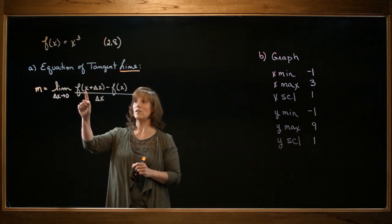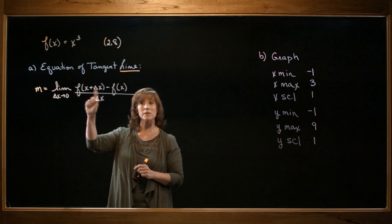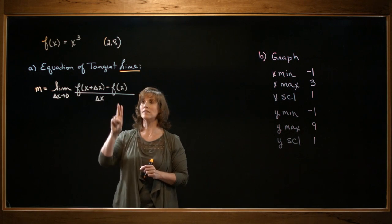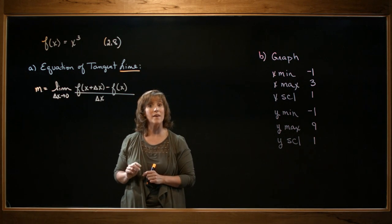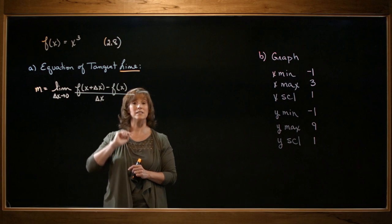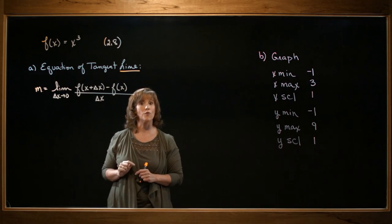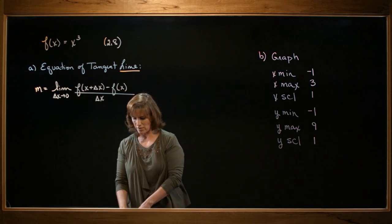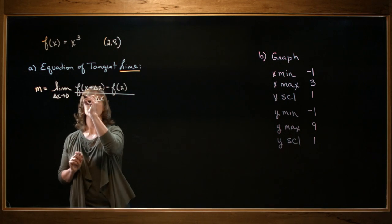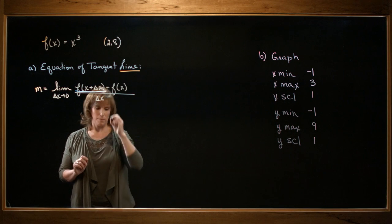We'll be looking at the function value when the input is x plus delta x. That's the first part. The second part is subtracting the f of x. The third part is dividing by delta x. And finally, part 4 is taking the overall limit.